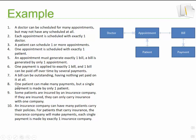Let's look at number eight: one patient can make many payments. We've got patient, we've got payments — we already know those two entities exist, so we just need to create that relationship. A patient can make many payments — so it's optional and they can make many payments. A payment should be made by only one patient, which indicates it's required.